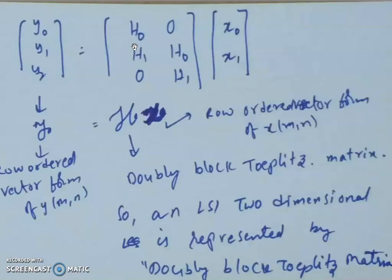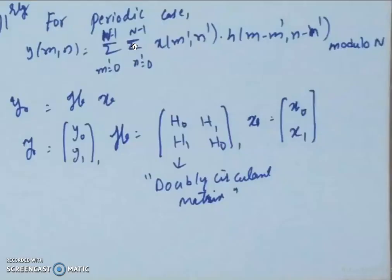Now let me put some food to your brain. Can a one-dimensional LSI system be represented by a doubly block Toeplitz matrix? Think about it and let me know — take it as an assignment. Similarly, in the periodic case, linear convolution will be replaced by circular convolution.